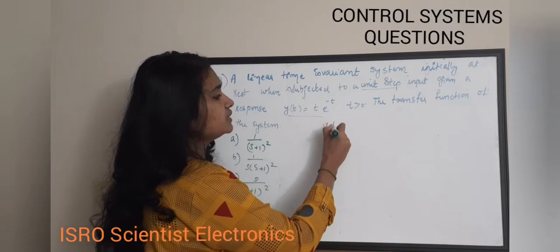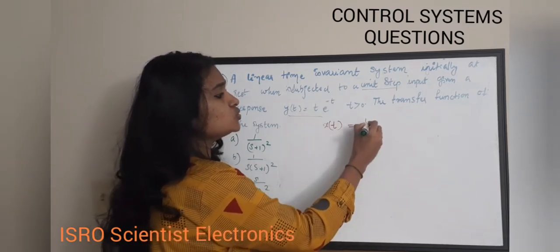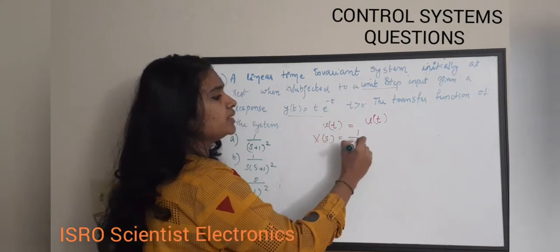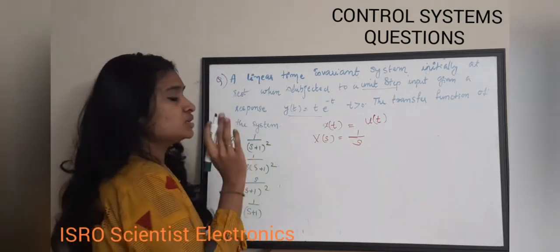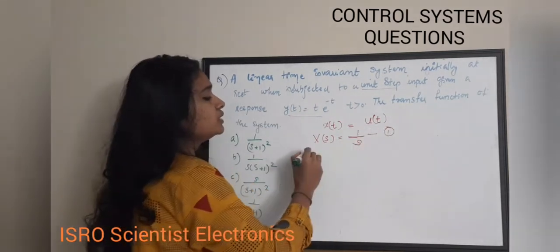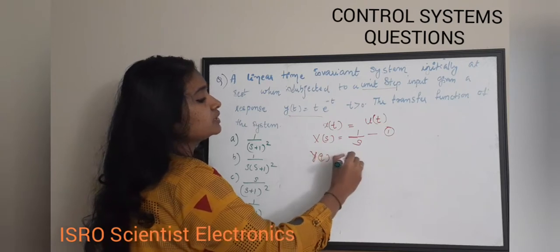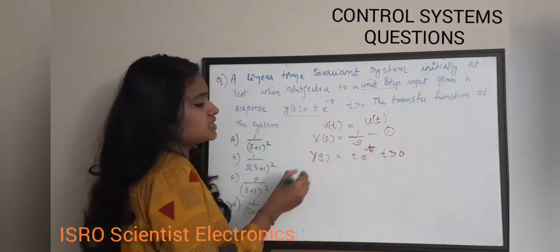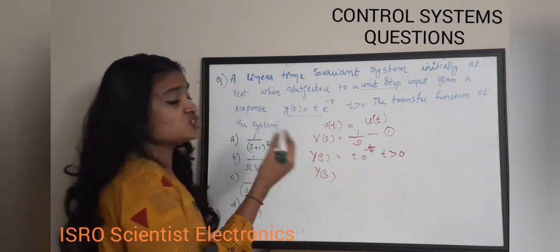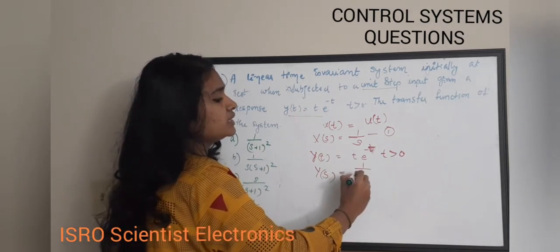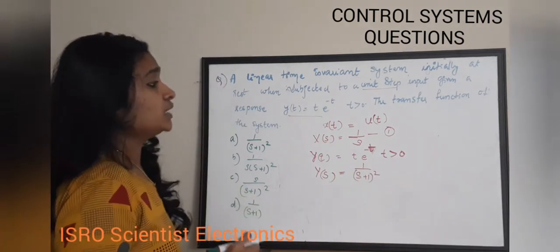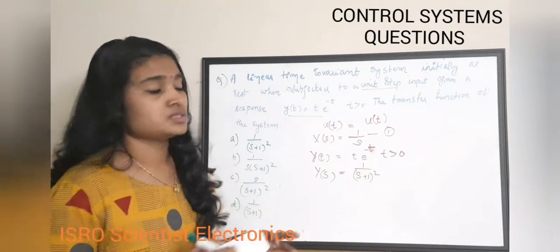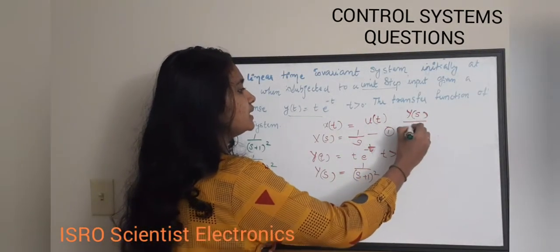The input function is a unit step u(t), and its Laplace transform is X(s) = 1/s. The output function is y(t) = t·e^(-t) for t > 0, and the Laplace transform of t·e^(-t) is Y(s) = 1/(s+1)². The transfer function is defined as Y(s) / X(s).